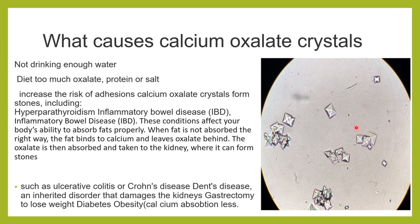Certain conditions increase the precipitation of calcium oxalate crystals — for example, hyperparathyroidism and inflammatory bowel disease. In inflammatory bowel disease, the patient has an absorption problem, so fat is not absorbed properly. That fat combines with calcium, and when calcium is taken up by fat, the oxalate is left free to precipitate and can lead to formation of stones.